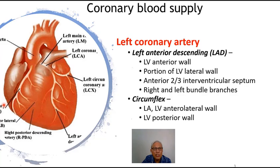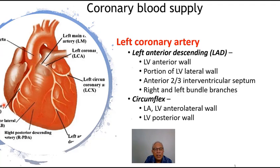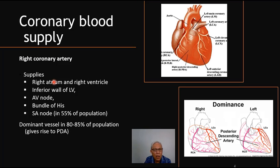Another branch of the left coronary artery is the circumflex coronary artery. The term 'circumflex' means 'circle around,' and it feeds the left atrium as well as the left ventricular anterior lateral wall and the posterior wall.